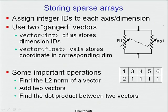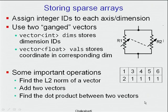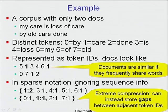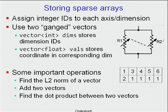Important operations on sparse vectors include: finding the L2 norm, adding two vectors, and computing the dot product. The dot product is important to determine similarity between documents — if two documents share term 1, the dot product contribution from dimension 1 is two times one, reflecting overlap. So computing a dot product reveals similarity between documents.